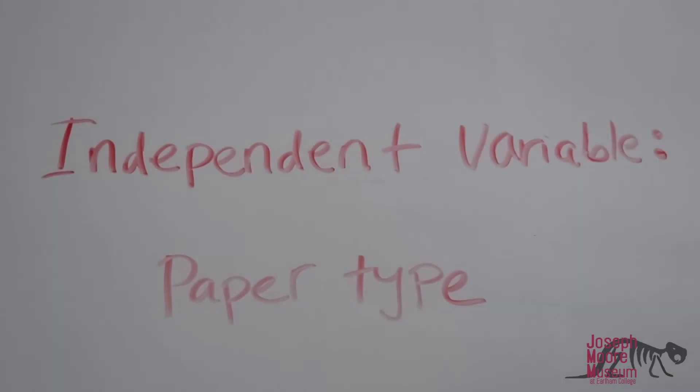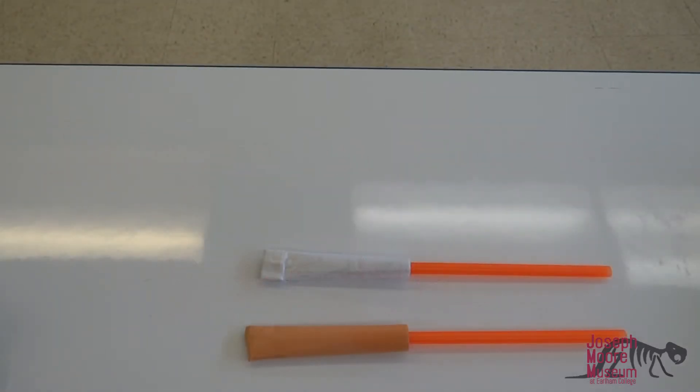Your independent variable is what you change. In this case, it will be the type of paper you use.